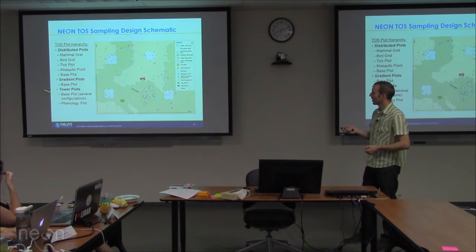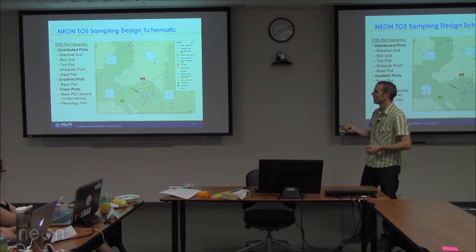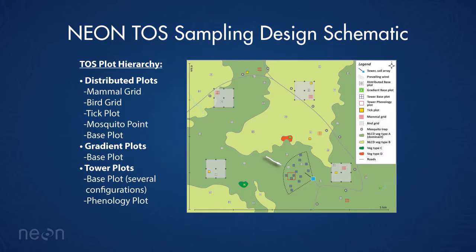We have a maximum of five gradient plots, but we do have 20 distributed plots where we'll be making these measurements, giving us some flexibility to create good calibration or validation of airborne remote sensing products from the airborne observation platform. There are also tower plots clustered within the air shed of the tower, which are important for tying ground measurements to tower measurements — linking NPP and NEE.